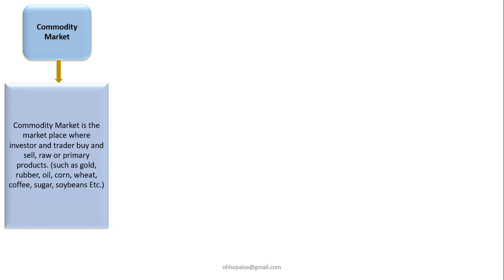Let's begin with commodity market. Commodity market is the marketplace where investors and traders buy and sell raw or primary products such as rubber, oil, corn, wheat, sugar, soybean, etc.